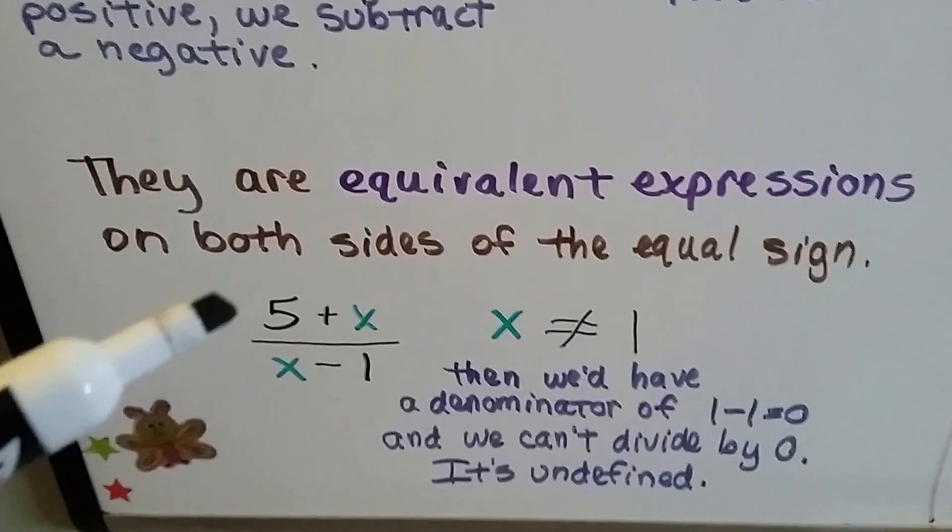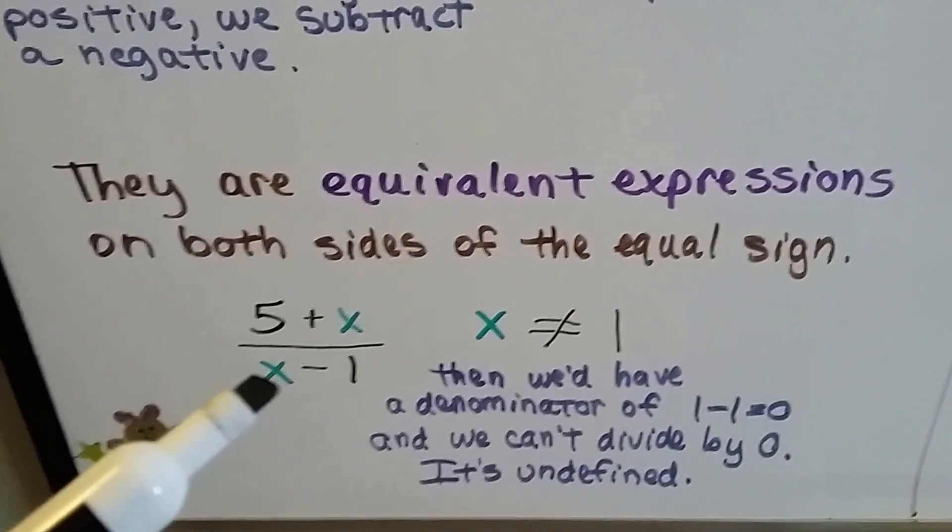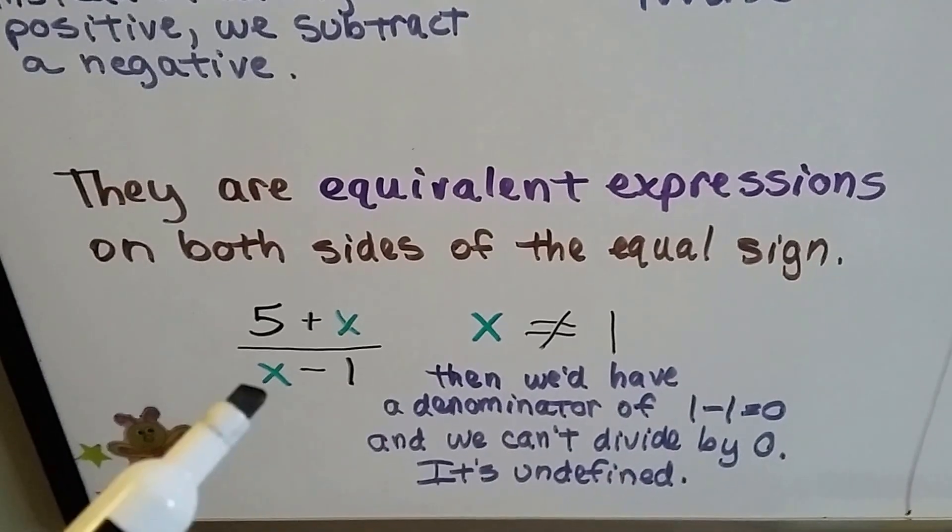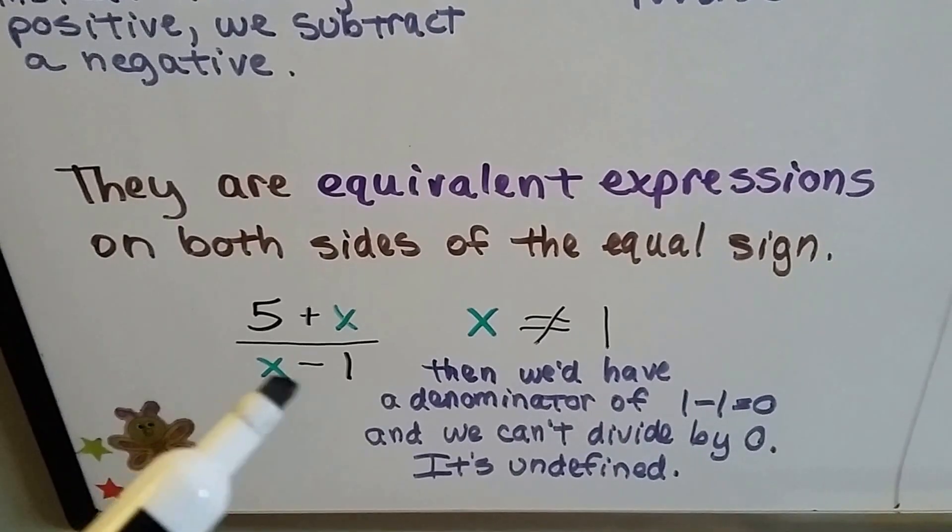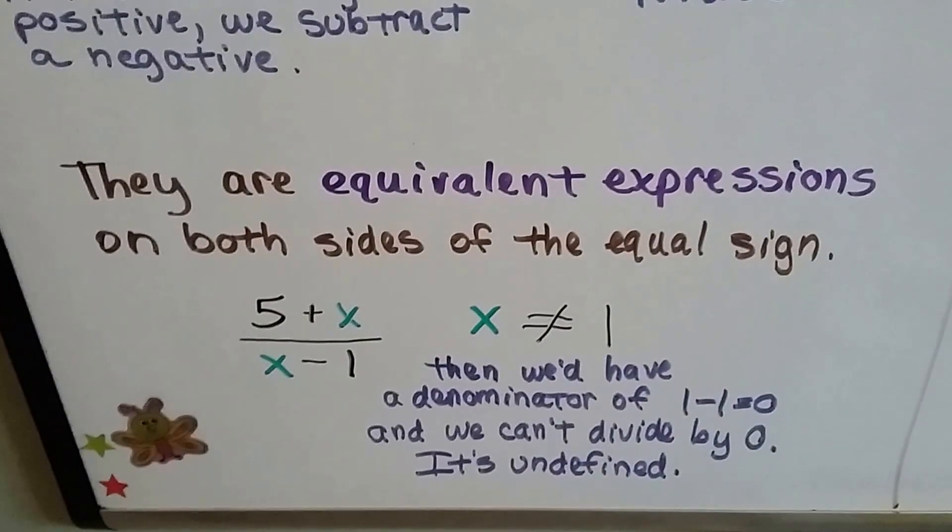And remember, if we have 5 plus x over x minus 1, x can be anything, but it can't be a 1. Because then we'd have 1 minus 1 down here as the denominator, and we can't divide by 0. It's undefined. We just learned that.